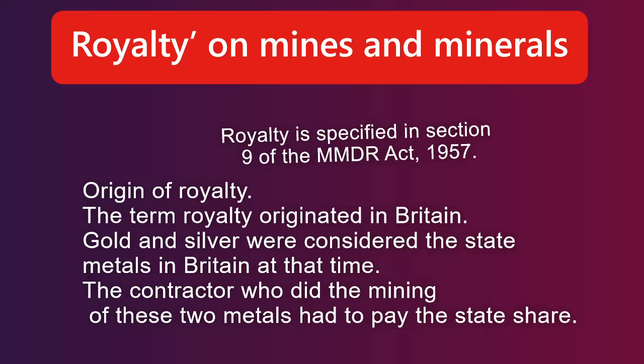रॉयल्टी का उत्पत्ति कैसे हुई? बहुत पहले यह term Britain में प्रचलित था। Britain में gold और silver दोनों state metal हुआ करते थे। इन metals की mining के लिए जो contractor को lease दिया जाता था उसे इन metals की mining के बदले में कुछ राज्य को pay करना पड़ता था। और यही payment royalty कहलाया, क्योंकि यह royal crown को pay करना था, इसीलिए इसको royalty कहा गया।